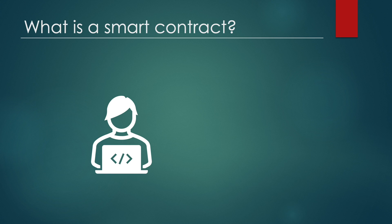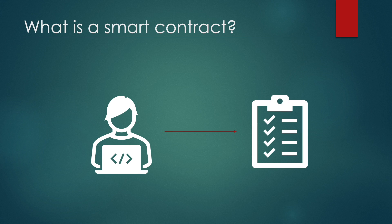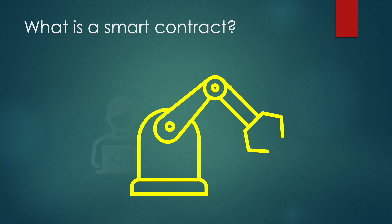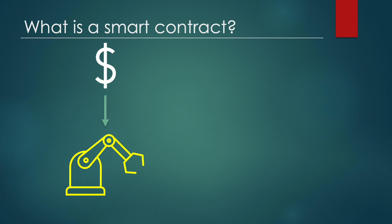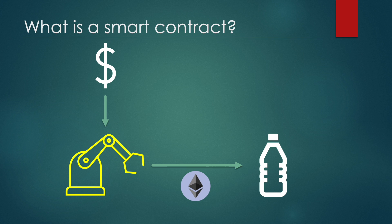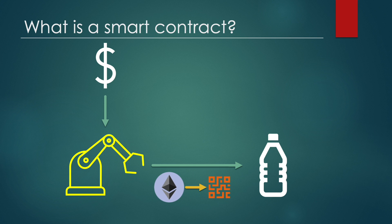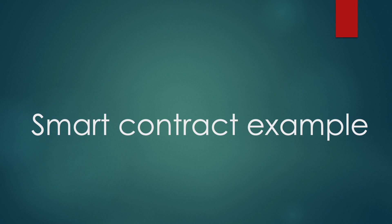Before we speak about oracles, we have to talk about smart contracts. Basically, smart contracts are self-operating computer programs that automatically execute when specific conditions are met. You can think of a smart contract as a vending machine — just like a vending machine is configured to take in dollars and dispense your item of choice, smart contracts work in a similar way, using ether as fuel or gas fees to execute the code based on pre-configured rules.